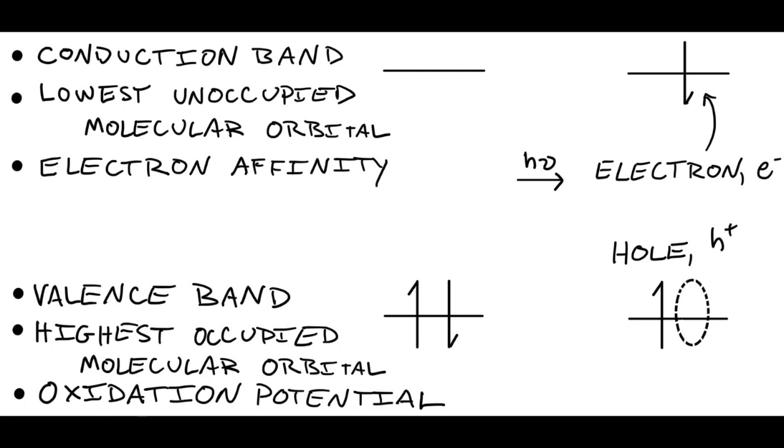If that doesn't make any sense to you, don't worry about it. Anyway, there's a band above the valence band called the conduction band. And when charges get put there, they can move around a lot more easily. And that is the lowest unoccupied molecular orbital. And it's sometimes referred to as the electron affinity.